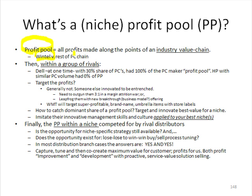Instead of looking at the entire industry, let's look within a group of rivals. Back in the late 90s, Dell might have had 30% share of all PCs sold in America, but they really had about 100% of the profit pool because nobody else was making any money on PCs. Hewlett-Packard at the time had a similar market share but didn't have any profits in their PC business. So the idea was, if we know where all the money is being made on a profit basis, couldn't we target the profits?